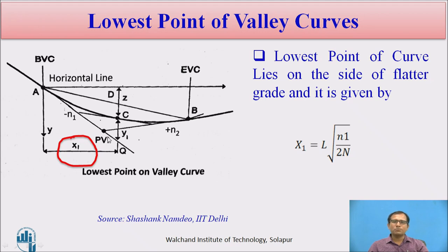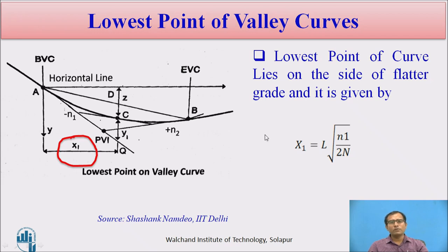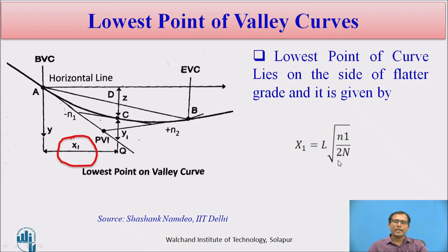To locate the drainage point in the lowest valley curve and to have cross drainage structures at the lowest point, and to avoid stagnation of water at the valley curve, we need to locate that lowest point. The lowest point of the valley curve lies on the side of the flatter gradient and is nearest to the first tangent. The distance x1 from the tangent to the lowest point is given by x1 = L × N1 / (2N), where N1 is the first gradient, N is the deviation angle, and L is the length of the valley curve.